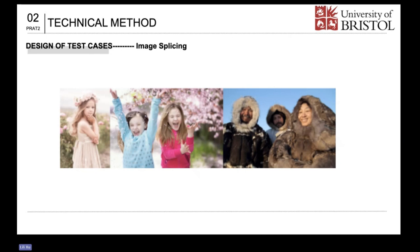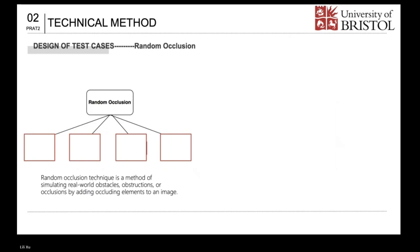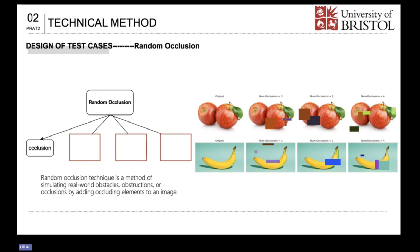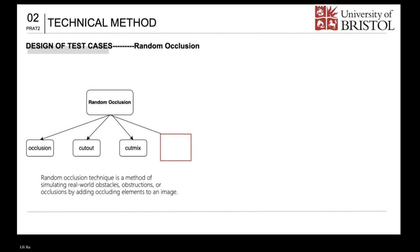The image splicing test case where several different images are merged. Random occlusion technique is a method of simulating real-world obstacles by adding occluding elements to an image. Certain parts of objects or images become unseen or obstructed. Random occlusion includes occlusion test case, cutout test case, cut mix test case, and mix of test case.